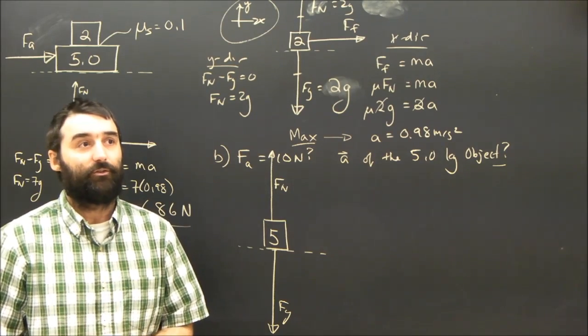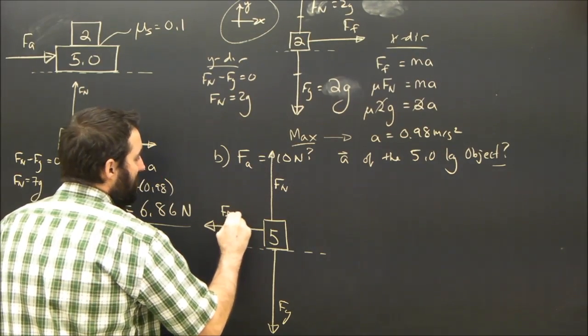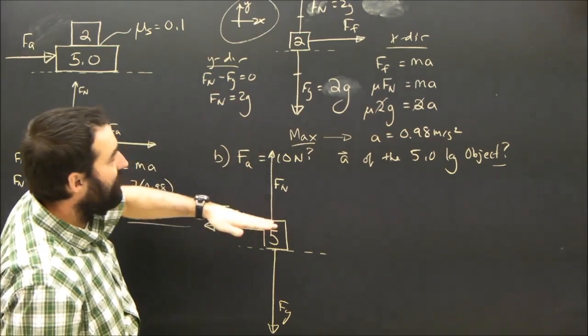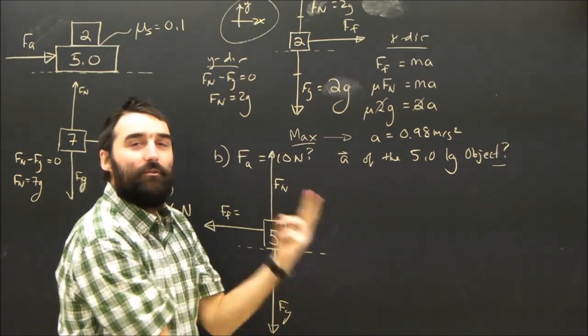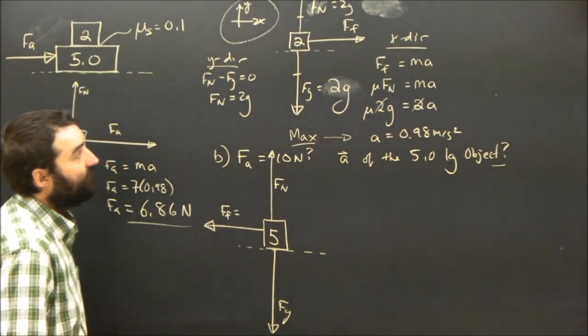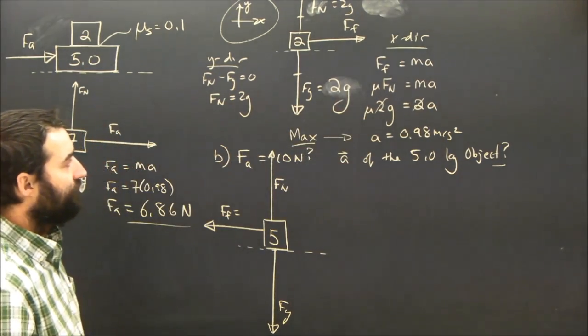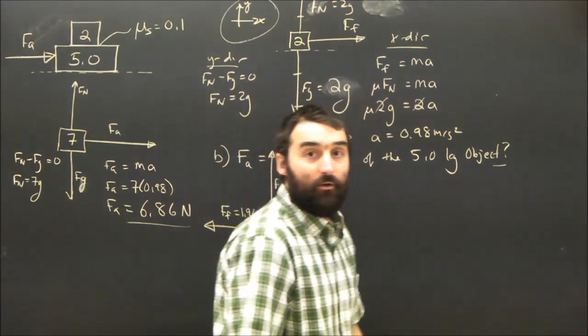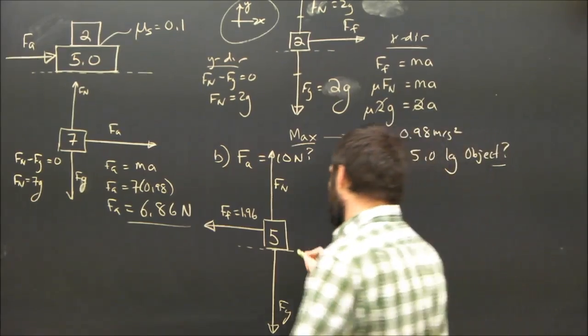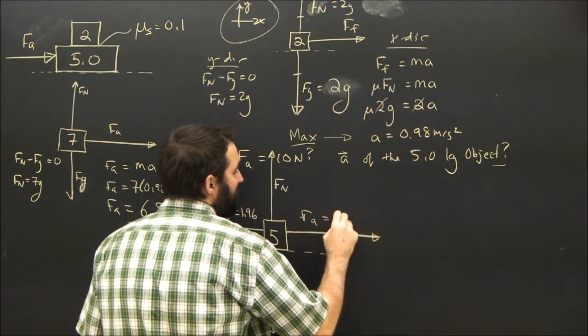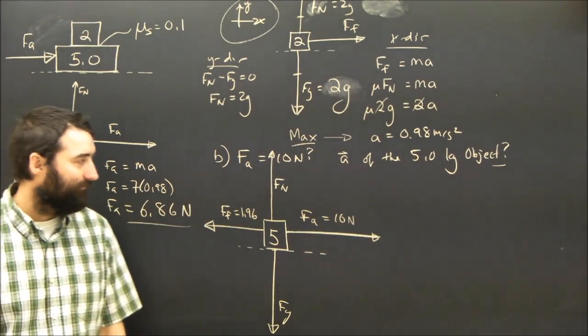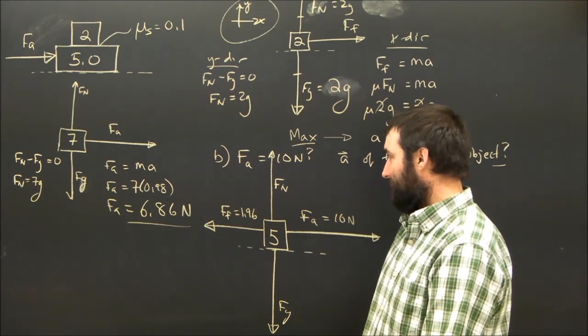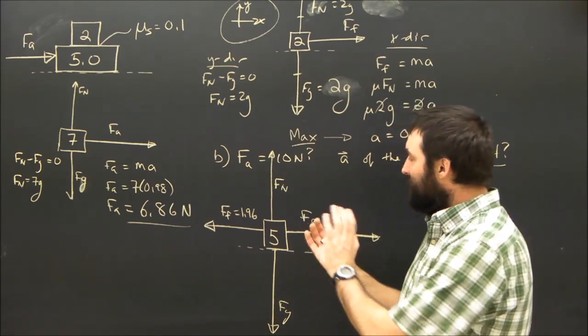What other forces are there on the 5 kilogram object? There's at least two. One, there's friction. Which way is friction? It's got to be on the left. Why does it have to be on the left? Because the friction on this guy was to the right. Who is applying that force? The 5 kilogram object. If the 5 kilogram object pushes the top one to the right, then Newton's third law says the top one must be pushing the bottom one in the opposite direction. So it's going to be mu Fn, mu 2g. That's 1.96. So there's going to be friction backwards on this guy. Obviously there's an applied force to the right, which is equal to 10. That's a given from the question. But I'm still not done because I still haven't actually accounted for all the forces.